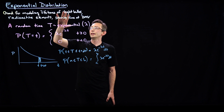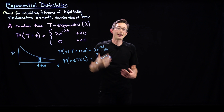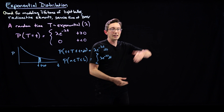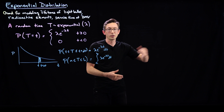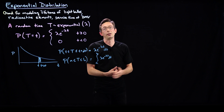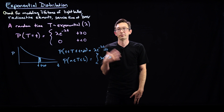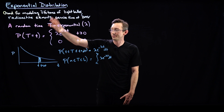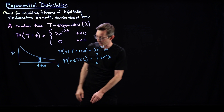You can use this to model things like the probability that a light bulb will fail in 10 minutes from now, or 10 hours from now, or 100 hours from now. This is a very useful distribution.